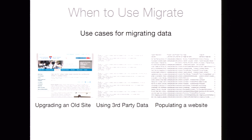Migrate can also be used for websites where you're using third-party content. Let's say you're building a website that uses open data — databases of information made available from the government or a non-profit organization. You want to get that content into your website, and again, you're probably talking about a lot of content that would be impossible to create by hand.